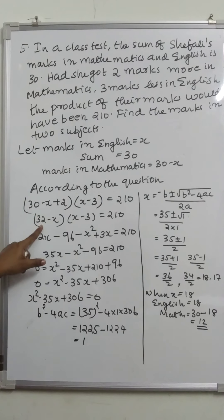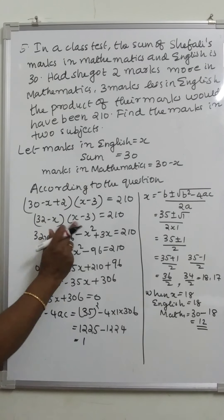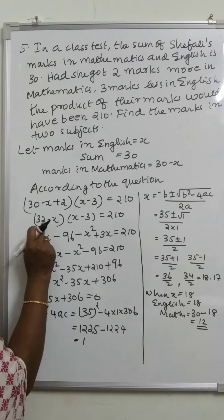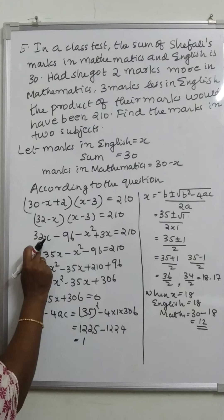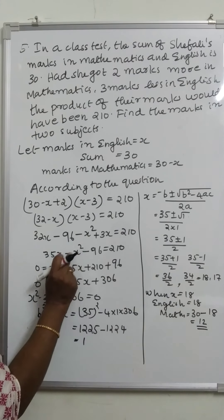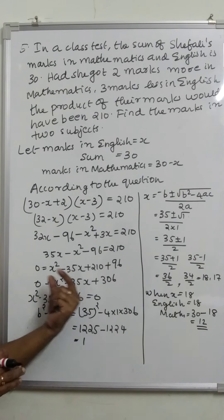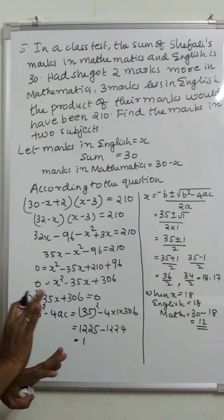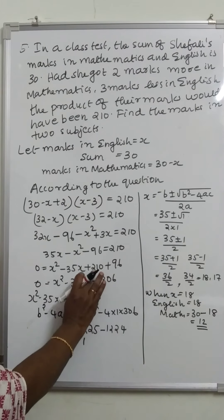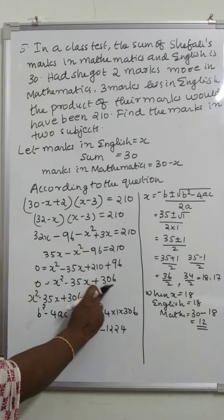Expanding the bracket: 32x minus 96 minus x squared plus 3x is equal to 210. Combining like terms, 35x minus x squared minus 96 is equal to 210. Rearranging, the equation becomes x squared minus 35x plus 306 is equal to 0. This can be solved by factorization or the quadratic formula.